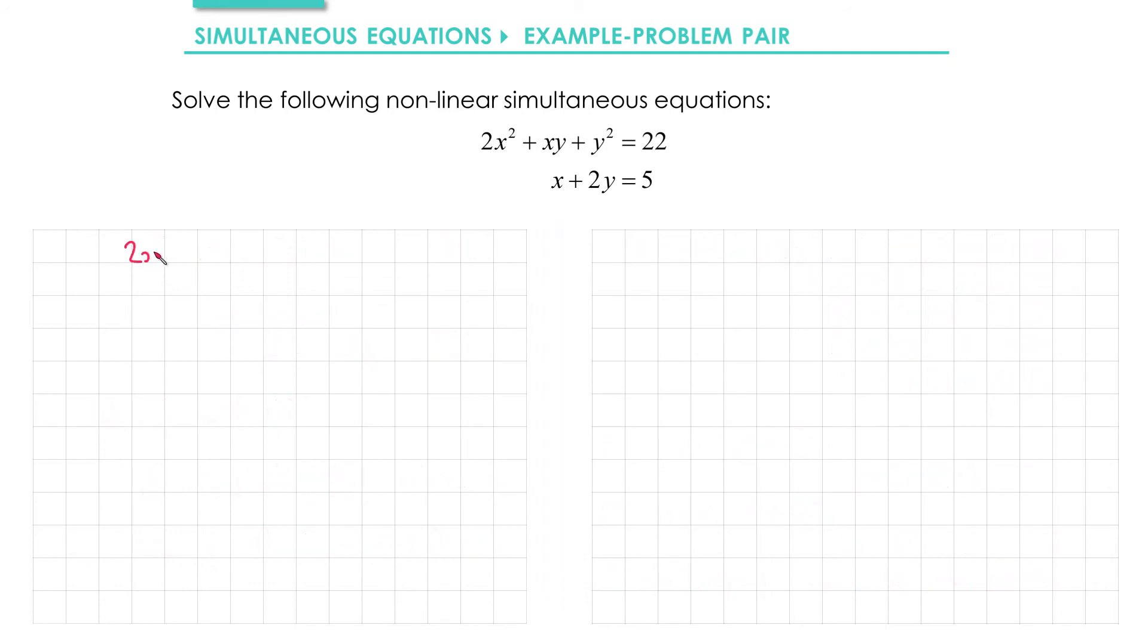So we'll start by labeling our equations. We have 2x² + xy + y² = 22. We'll label that equation 1, and we have x + 2y = 5. We'll rearrange that before labeling to get x = 5 - 2y, and we'll call that equation 2. Then we'll sub equation 2 into equation 1. That means replacing everywhere we see an x with 5 - 2y. So we get 2(5 - 2y)² + (5 - 2y)y + y² = 22.